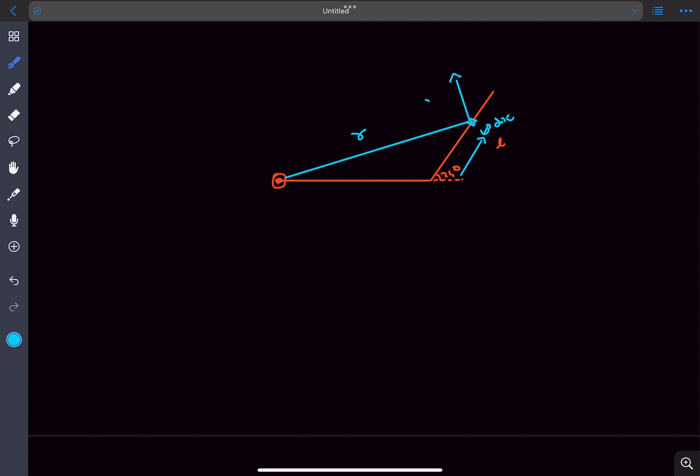The area vector of this small patch will be in this direction, normal to the square loop. Let's say if this angle is alpha, then this angle will also be alpha.